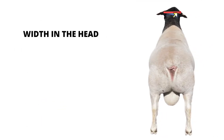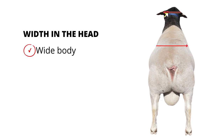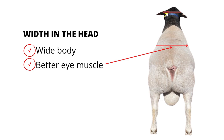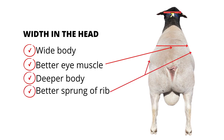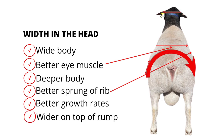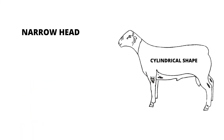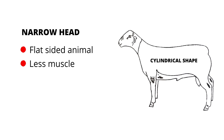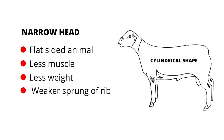Then a wide head. Width in the head correlates to a wide body, better eye muscle development and a deeper body, better spring of rib, better growth rates, wider on top of the rump — which all means more money in your pocket. On the other side, a narrow head directly correlates with a flat-sided animal, less muscle, less weight, a weaker spring of rib and cylindrical sheep.